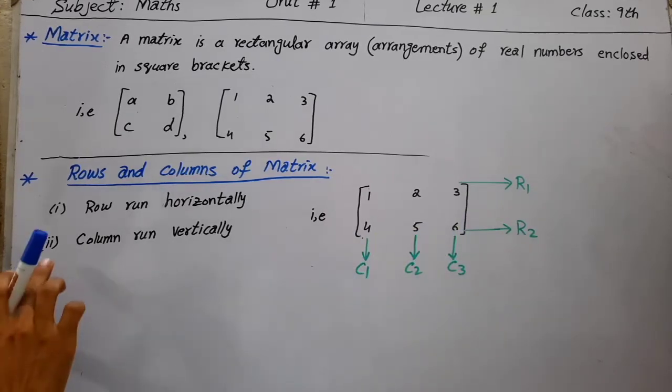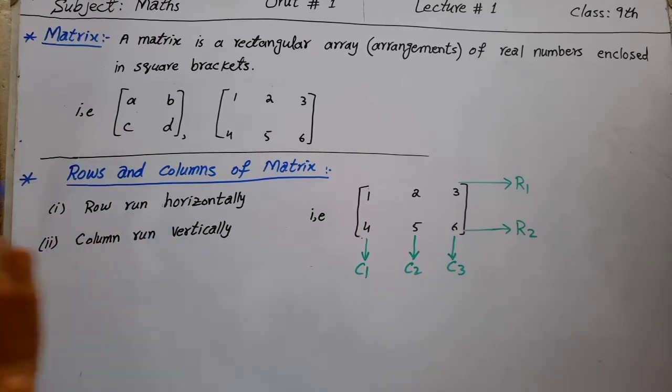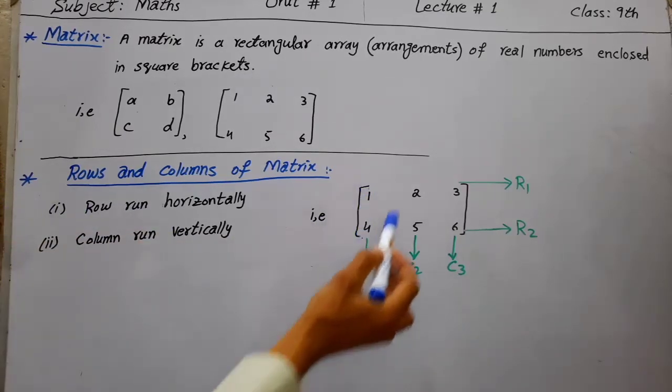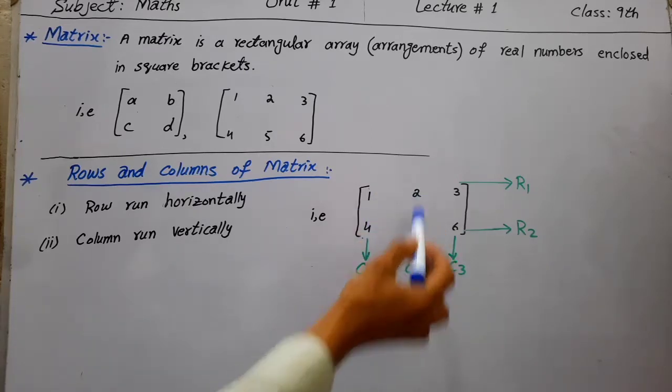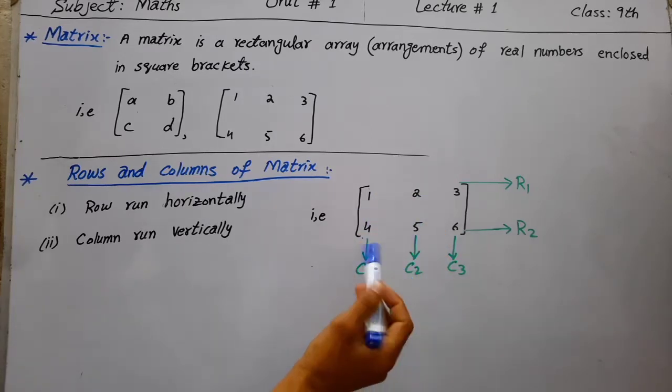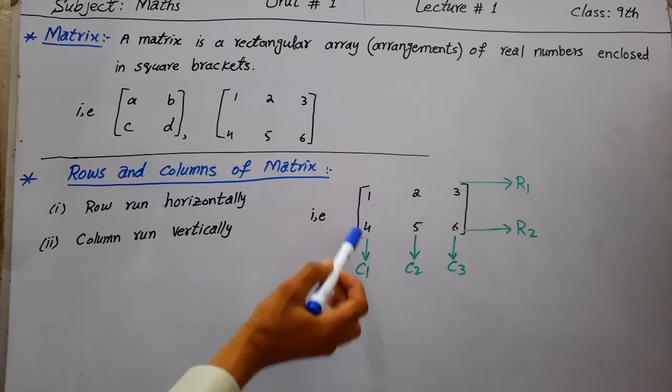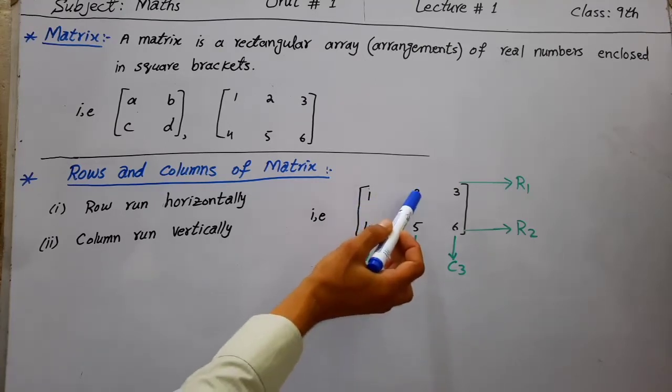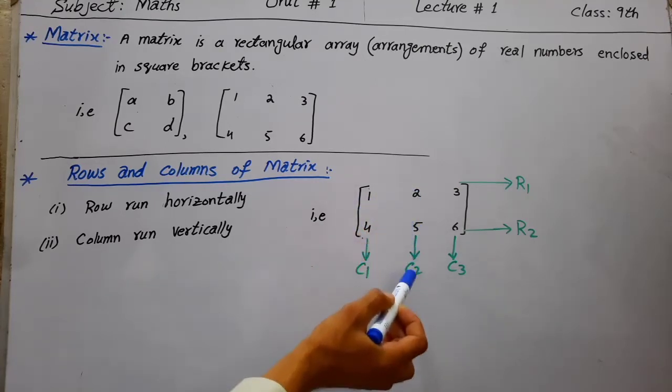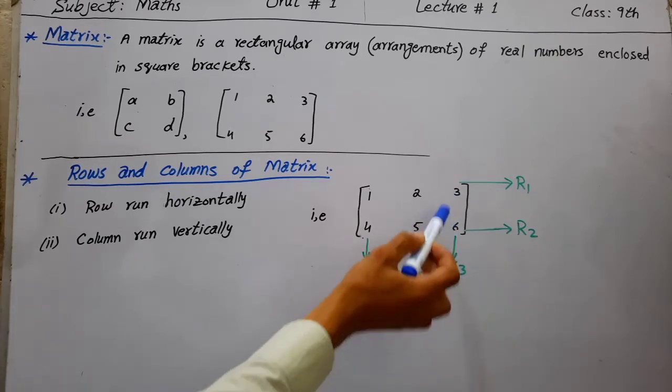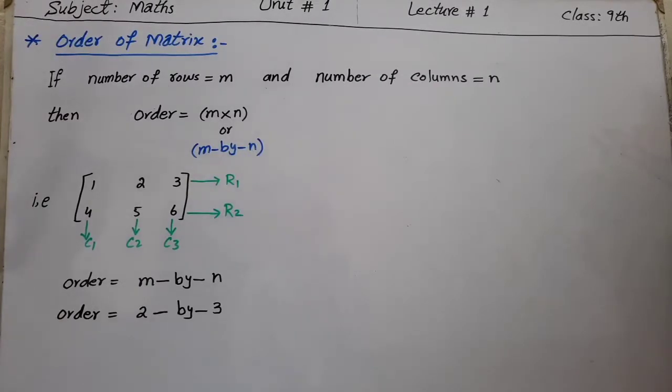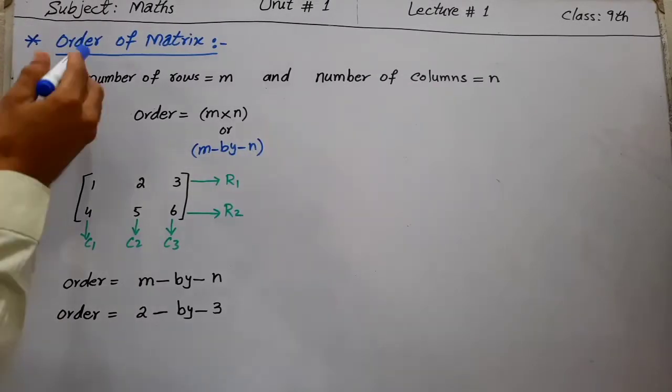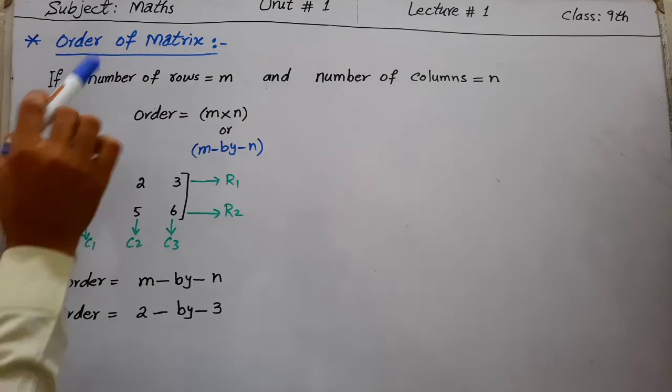Columns run vertically. For example, 1 and 4 form column number one, 2 and 5 form column number two, and 3 and 6 form column number three. Now we discuss the order of a matrix.